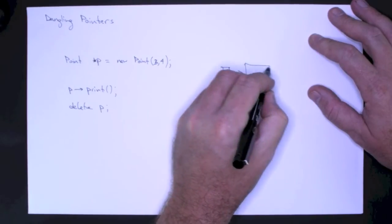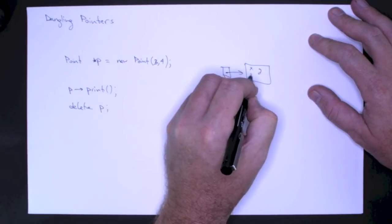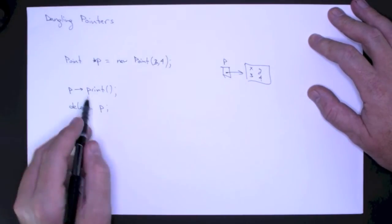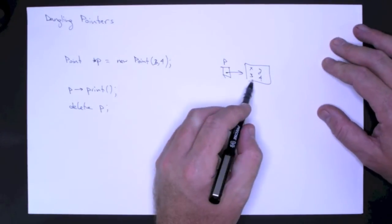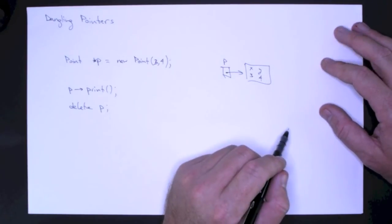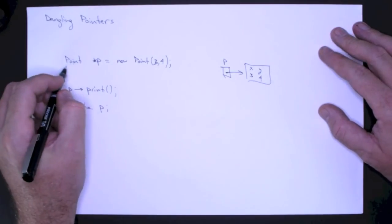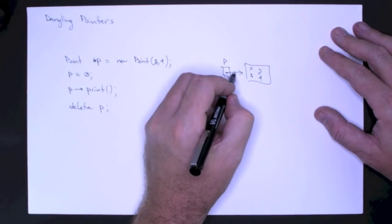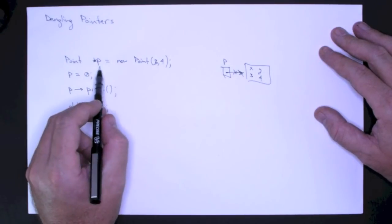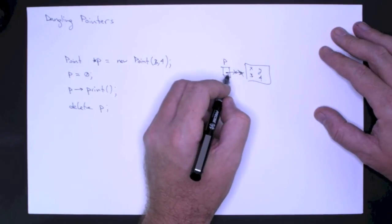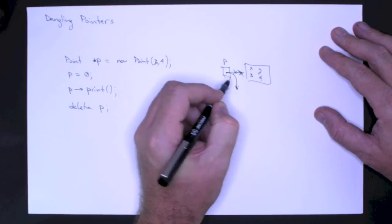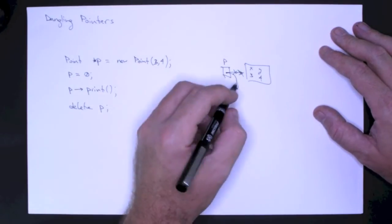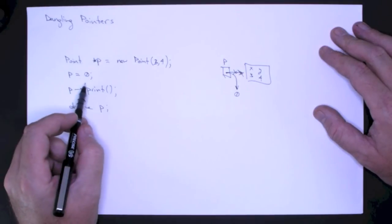And we have something that looks something like this. And of course, when we call the print method, we're going to print the Cartesian coordinate 3, 4. To simulate a dangling pointer, I am going to assign P to null. Now what this does, is even though this is a pointer to a point object, and even though I have created a point object, by assigning this to null, I've effectively created a dangling pointer.